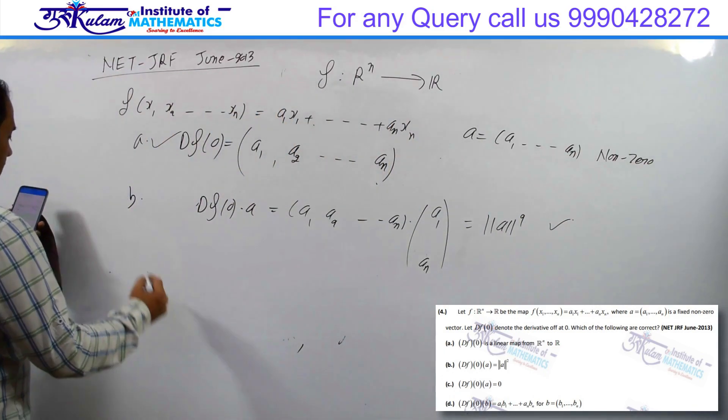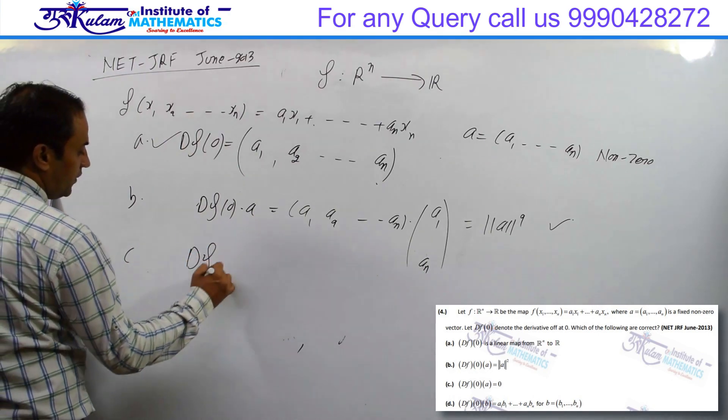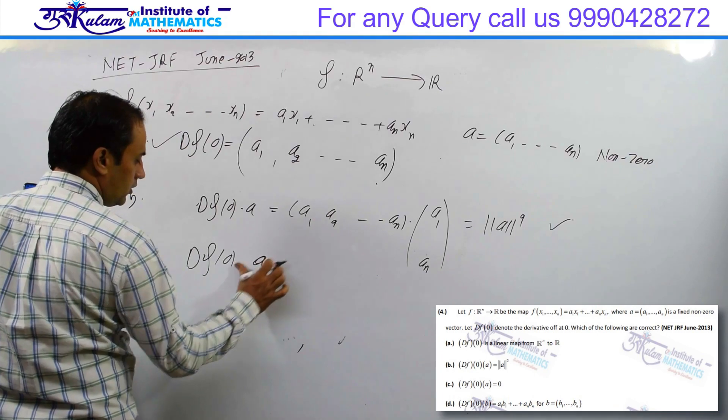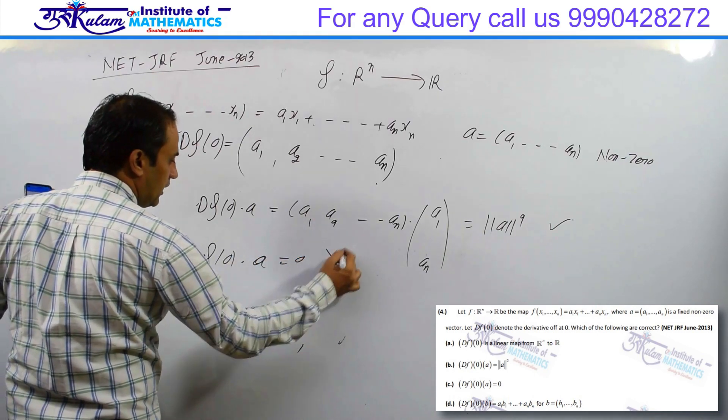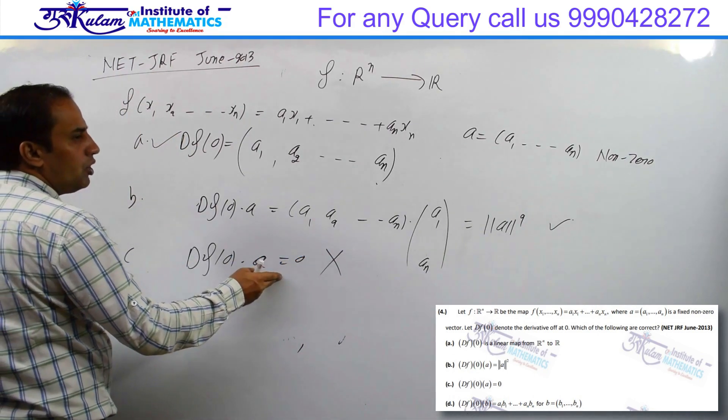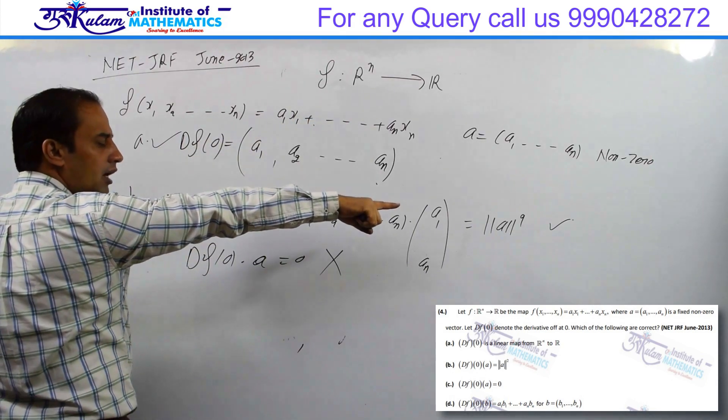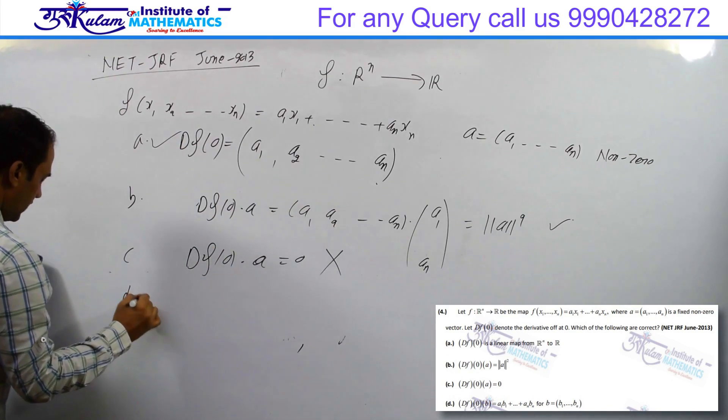Third option: df0 at a will be zero. This is definitely false. Why? Because the vector a given is non-zero, so its norm can never be zero.